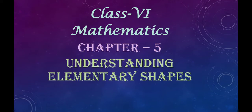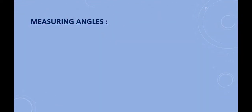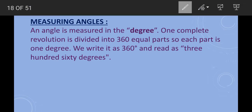Hello everyone, today we are going to learn about understanding elementary shapes. The topic we are going to discuss is measuring an angle. An angle is measured in degrees. One complete revolution is divided into 360 equal parts, so each part is one degree. A complete angle — measured around a point — is 360 degrees.